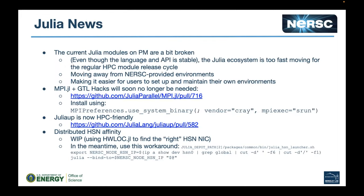Some news about Julia at NERSC: we are aware that the current Julia modules on Perlmutter are a bit broken. This is because both HPE and the Julia ecosystem are changing a lot of things behind the scenes, and the Julia ecosystem is moving very quickly. The model of providing pre-built environments isn't really working. Even though the Julia language and API are stable, having to rebuild Julia environments all the time makes it very difficult to keep on top of it. Therefore, we are moving away from having a NERSC-provided environment and instead just making it very easy for you to do the right thing when setting up your own environments.